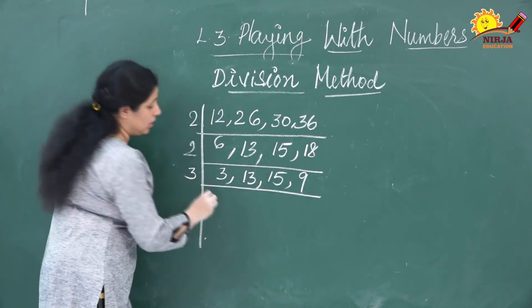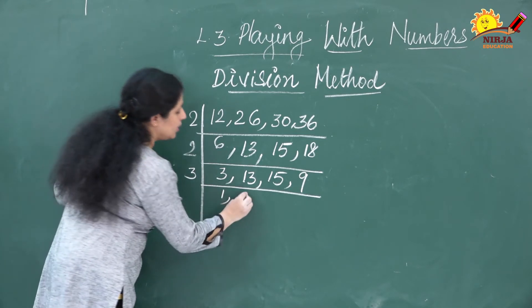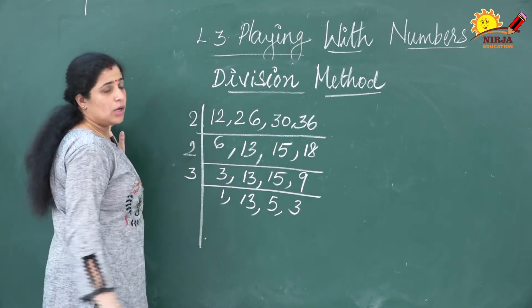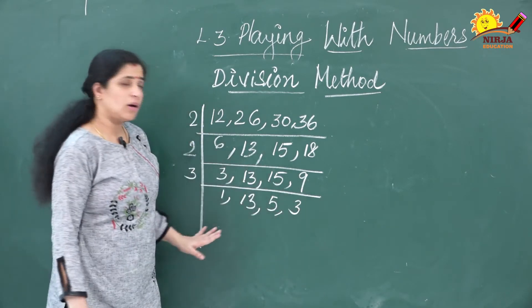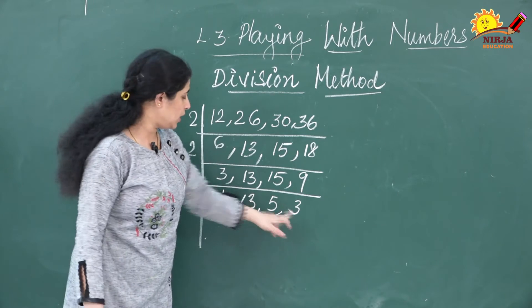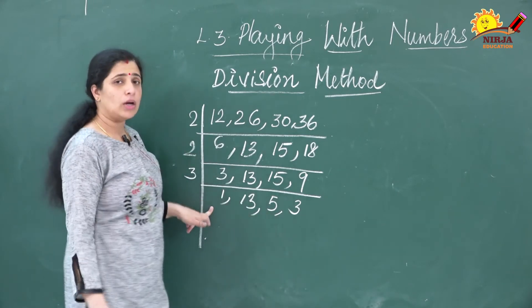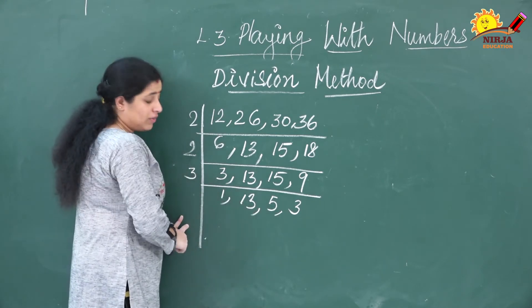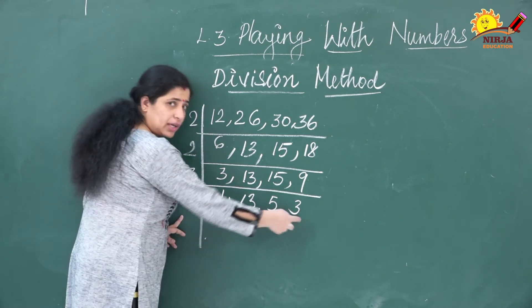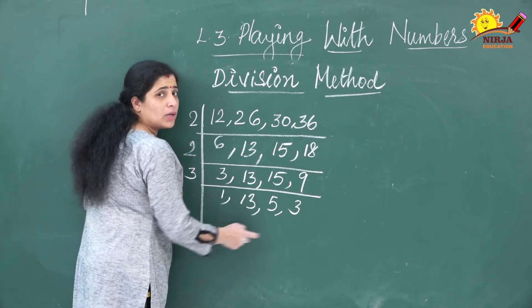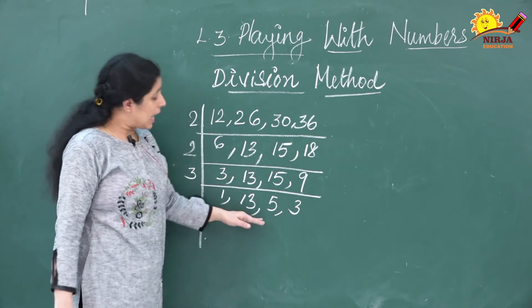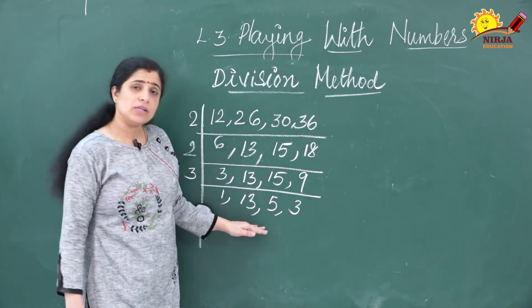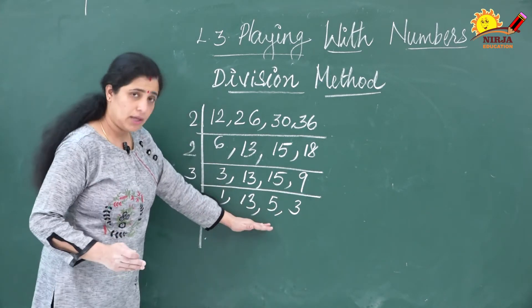Dividing by 3: you get 1, 13, 5, and 3. These remaining numbers — 3, 5, 13, 1 — are prime numbers. Dividing by 13: 1, 1, 5, 3. Dividing by 5: 1, 1, 1, 3. Dividing by 3: 1, 1, 1, 1. After the last step, if you are getting only prime numbers you can stop here.